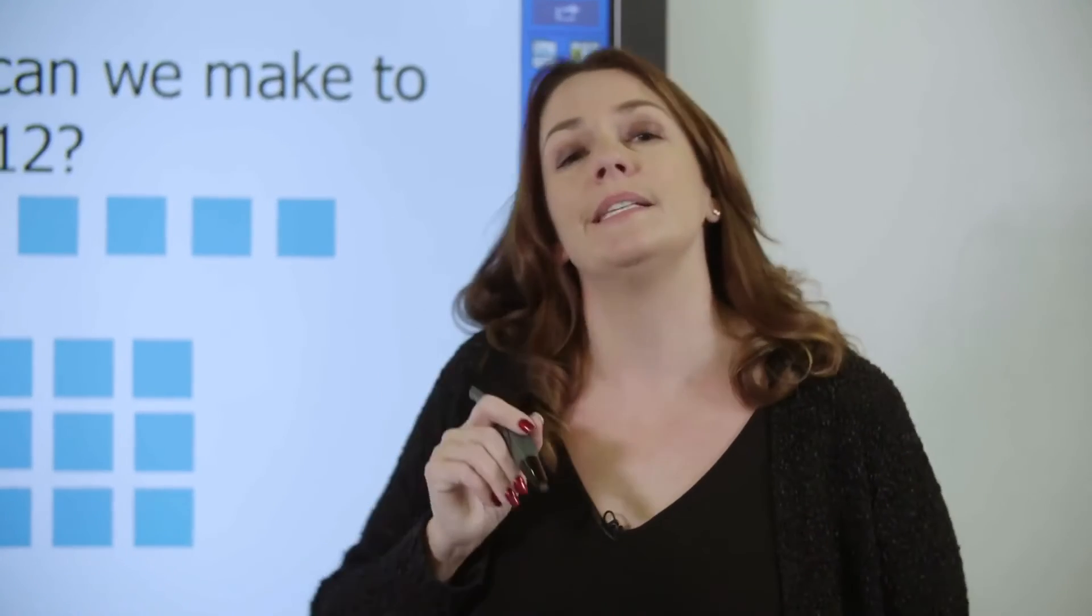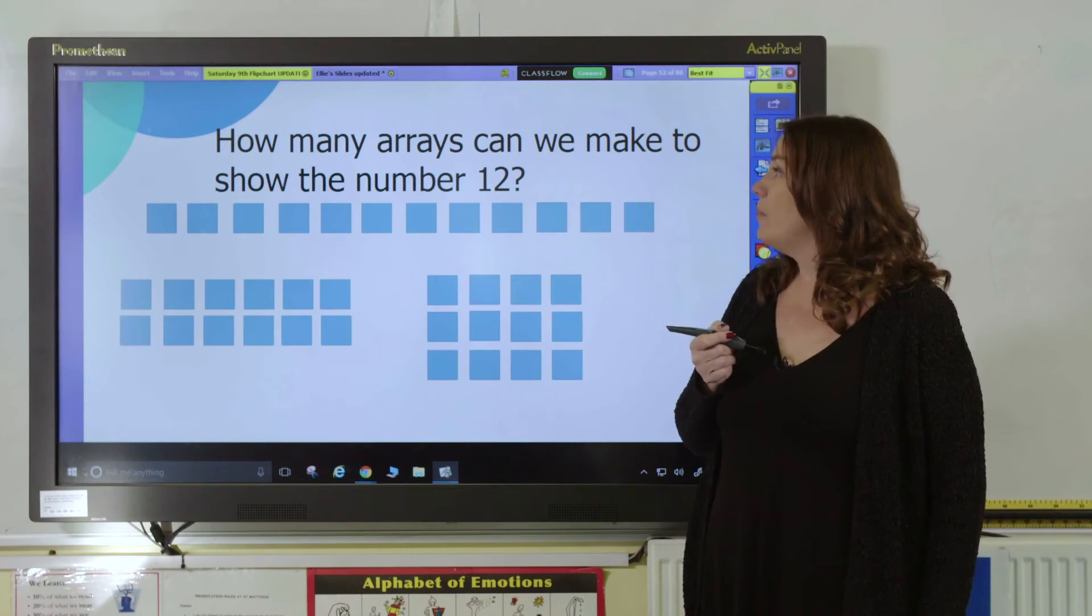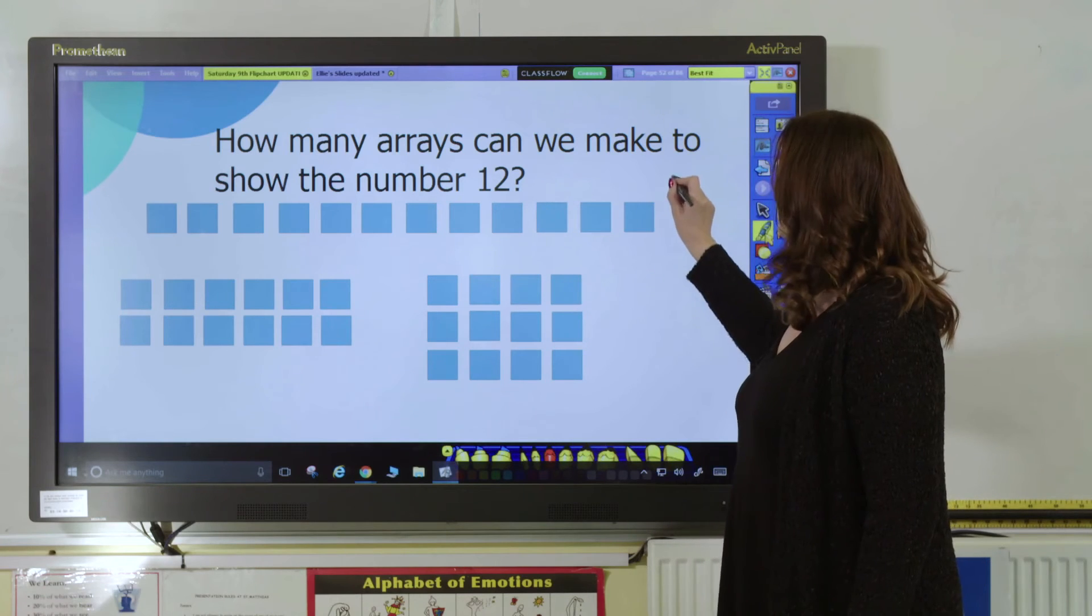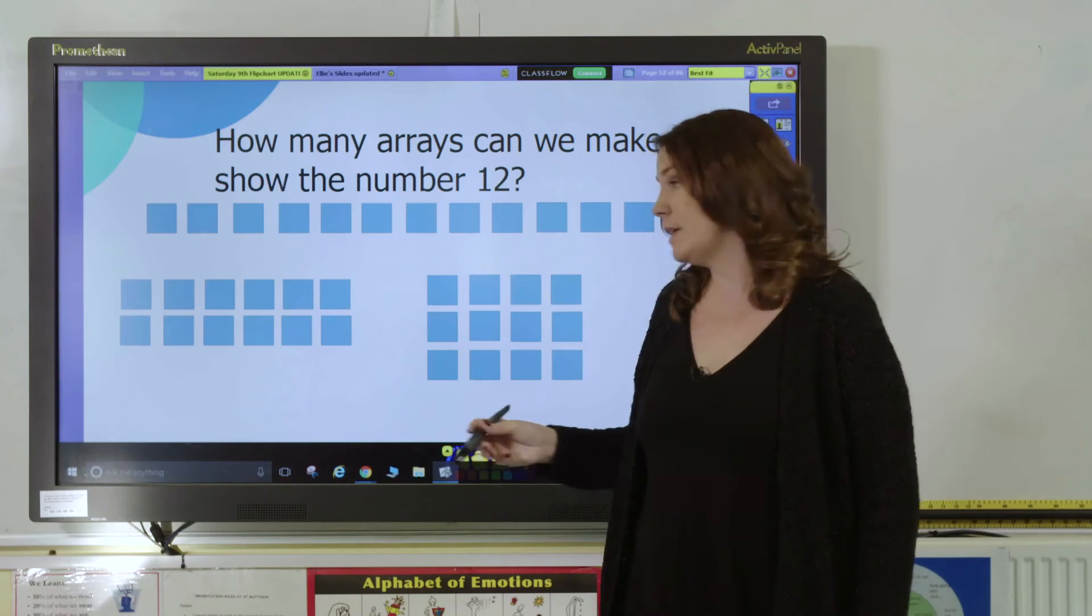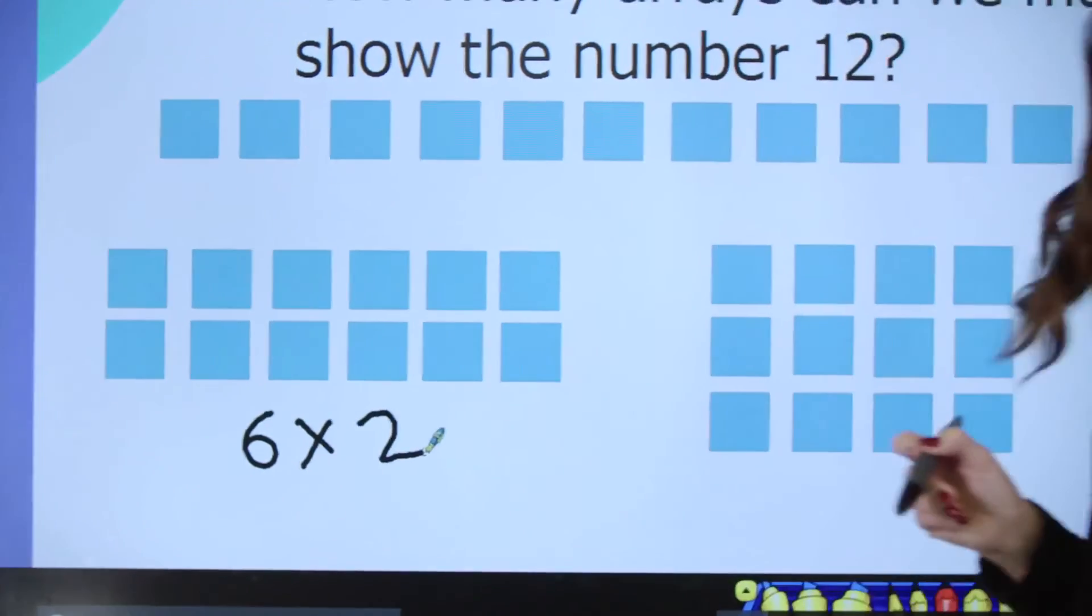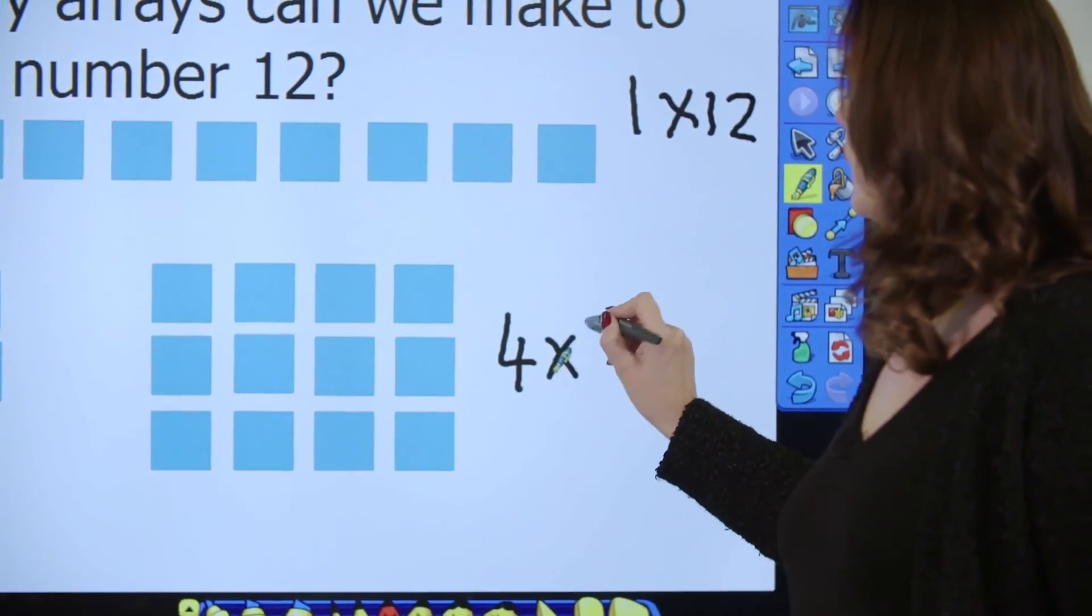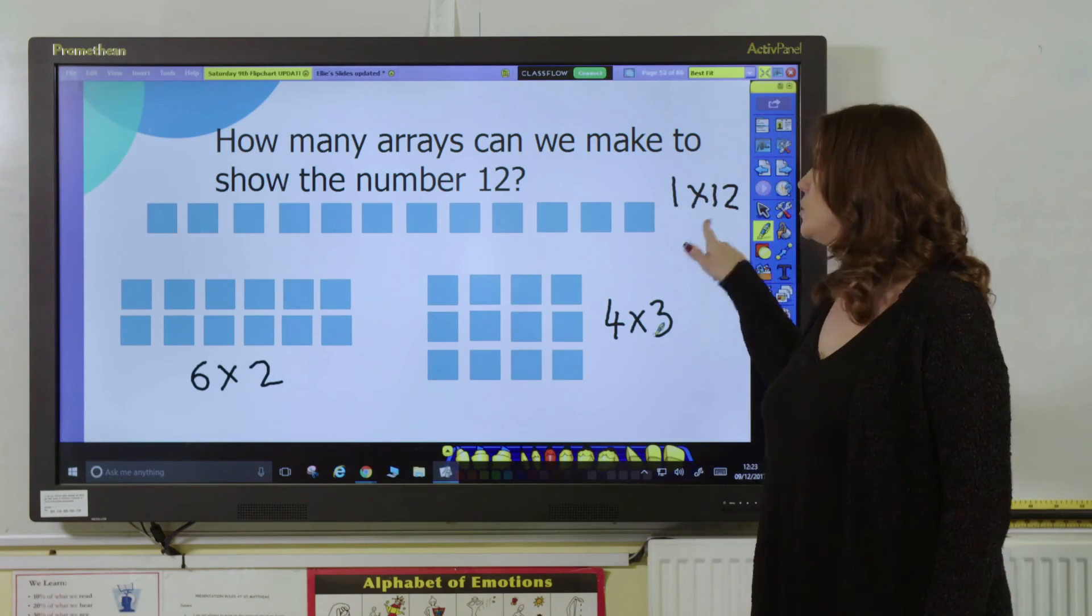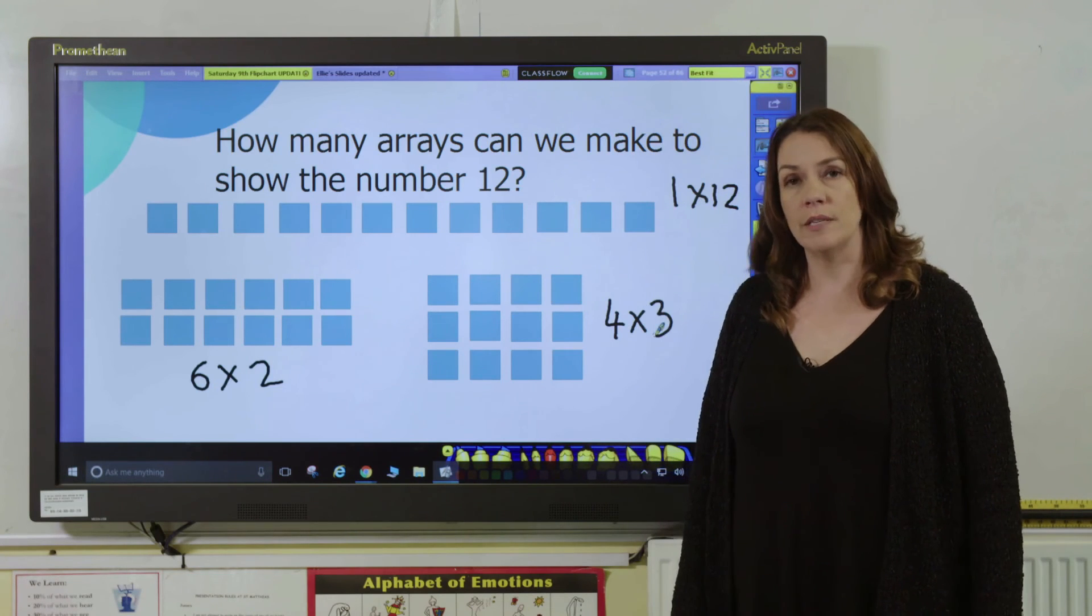We can also use arrays to investigate composite and prime numbers. For example, how many arrays can we make to show the number 12? Here we have one group of 12. This array represents 6 groups of 2 or 2 groups of 6, and this array represents 4 groups of 3, so 4 times 3. From this we can see that the factors of 12 are 1, 12, 6, 2, 3, and 4, so 12 is a composite number.